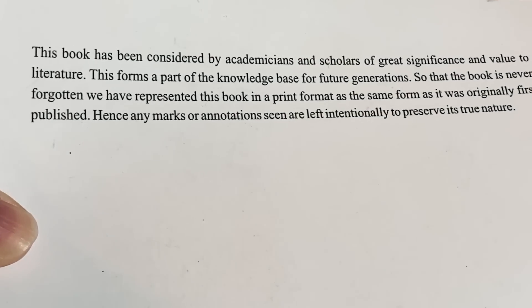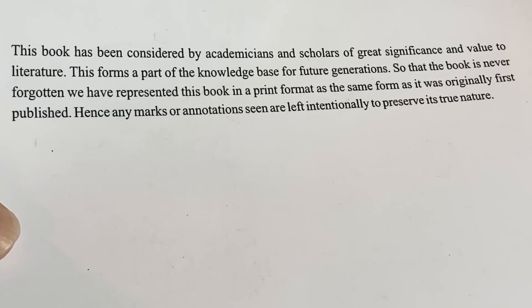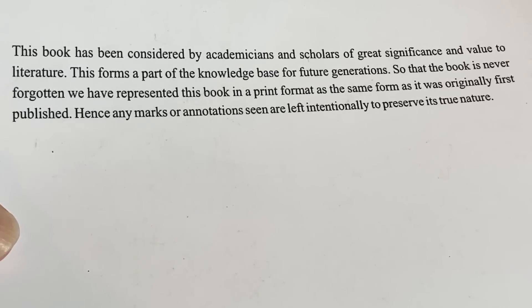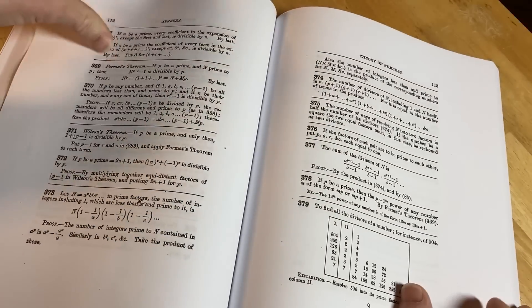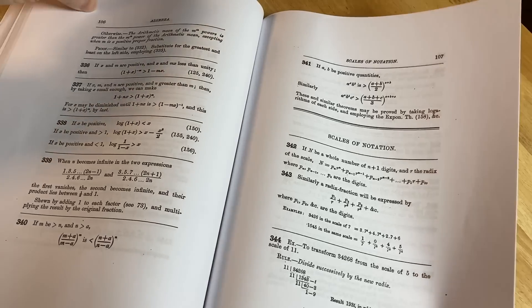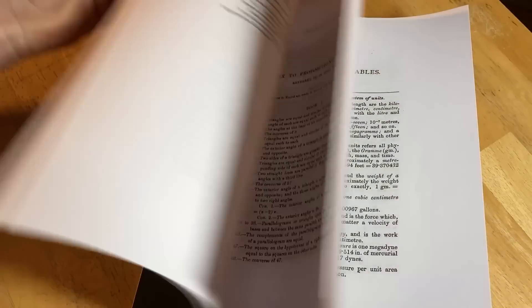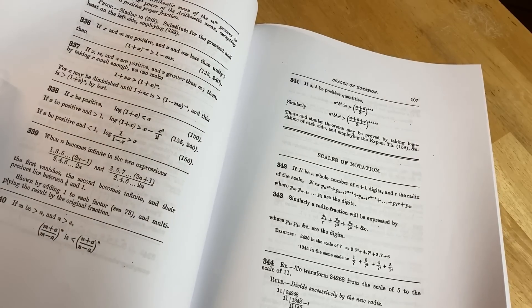This book has been considered by academicians and scholars of great significance and value to literature. This forms a part of the knowledge base for future generations. So the book has never been forgotten. We have represented this book in a print format as the same form as it was originally first published. Hence, any marks or annotations seen are left intentionally to preserve its true nature. I love this stuff. I love how they have things like this that are considered of historical significance and they put them in this place. It's called the public domain and they're free for everyone. And I think it's important. I think it's important to have things like this. I love how they leave the marks. Like if you see marks in here, it's because it's an actual reprint. It's one of the fun things about collecting old books. You get old books and it's like their history, right? This is a piece of history here. It's a piece of history that's been reprinted and is now sold on Amazon.